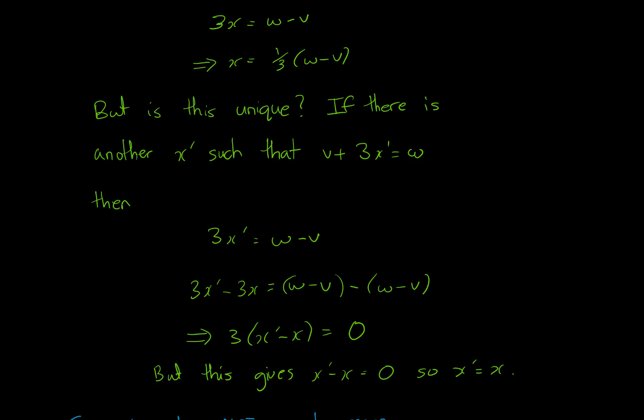So 3x′ − 3x, where x is this up here, will give us (w − v) − itself, which is equal to zero. But if 3(x′ − x) = 0, then x′ − x must be zero. So x′ = x.